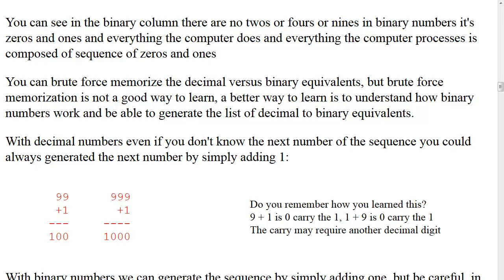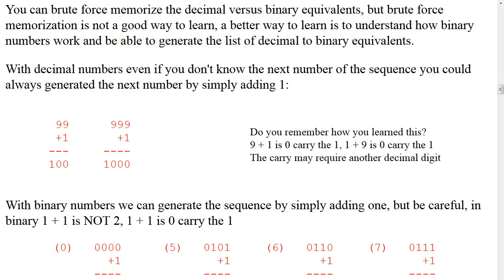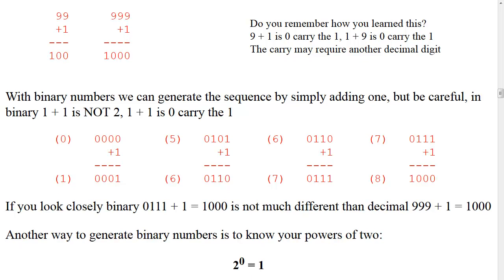You could brute-force memorize the decimal versus binary equivalents, but brute-force memorization is not a good way to learn. A better way is to understand how binary numbers work and be able to generate the decimal-to-binary equivalents yourself. With decimal numbers, even if you don't know the next number, you can always generate it by adding one. 99 plus 1 equals 100; 999 plus 1 equals 1000. Remember: 9 plus 1 is 0, carry the 1. If we start with binary 0 and add 1, the result is 001.